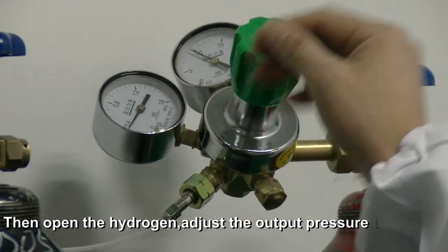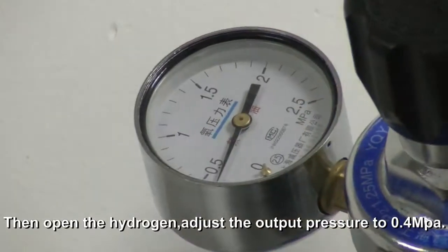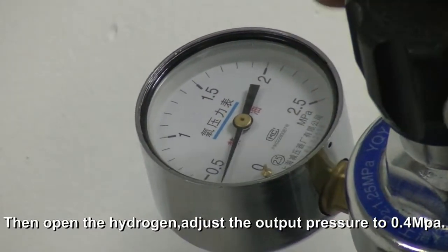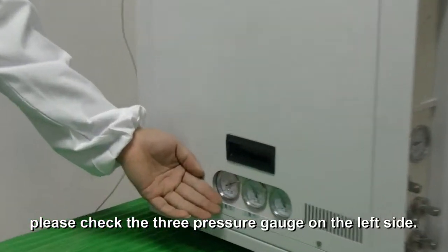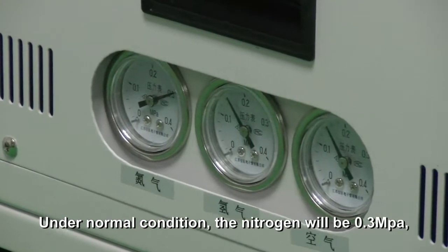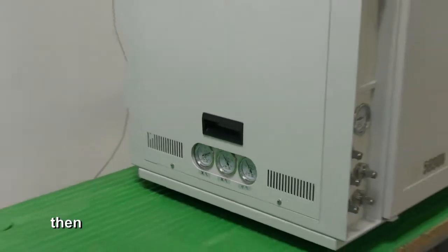After opening the gas, check the three-pressure gauge on the left side. Under normal conditions, the nitrogen will be 0.3 MPa, hydrogen and air will be 0.15 MPa. This means the gas path is connected correctly.